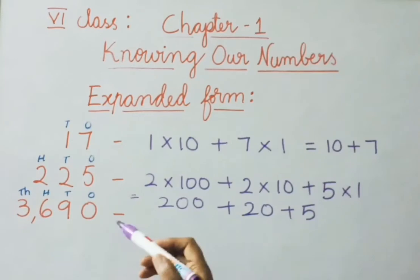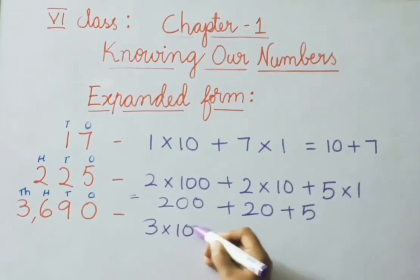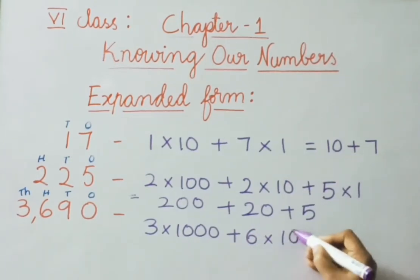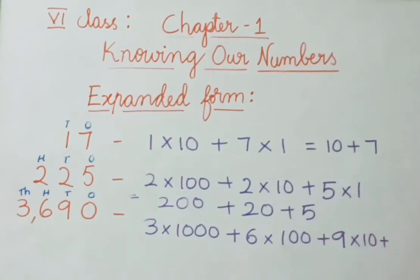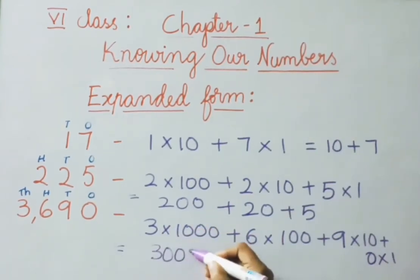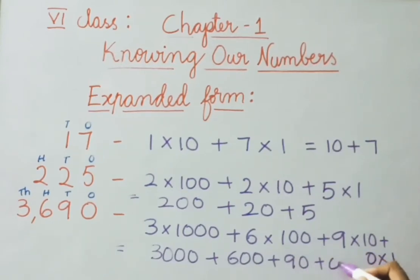See the next example: 3,690. Thousands place digit is 3, so 3 × 1000. Plus hundreds place digit is 6, so 6 × 100. Plus tens place digit is 9, so 9 × 10. Plus ones place digit is 0, so 0 × 1. The answer is 3000 + 600 + 90. So 3,690 in expanded form is 3000 + 600 + 90.